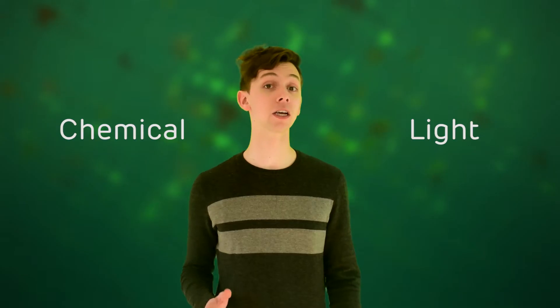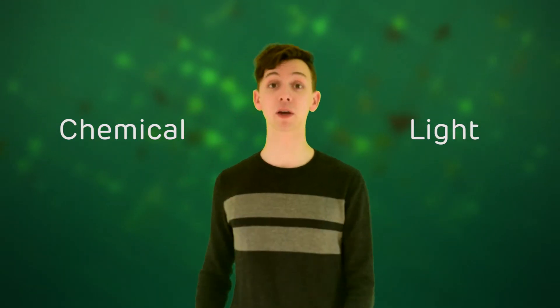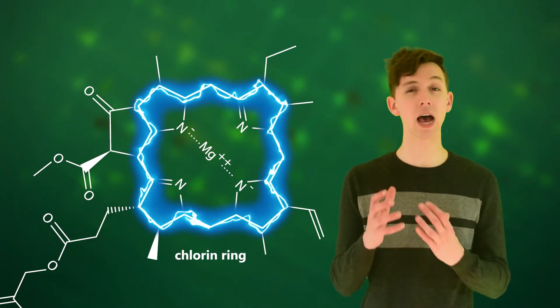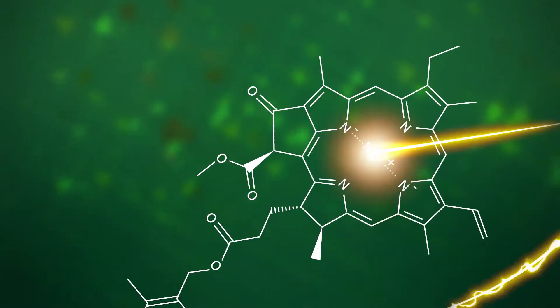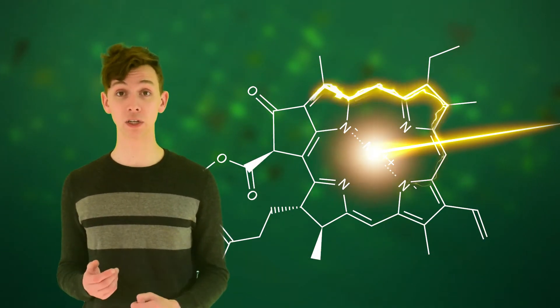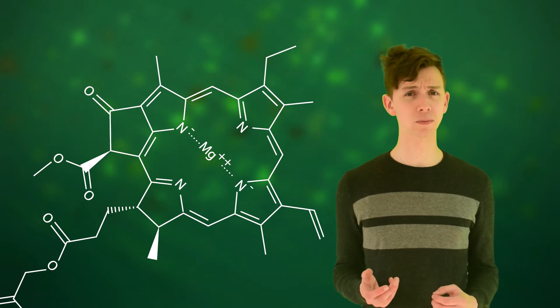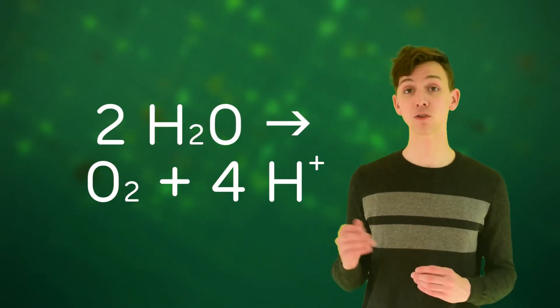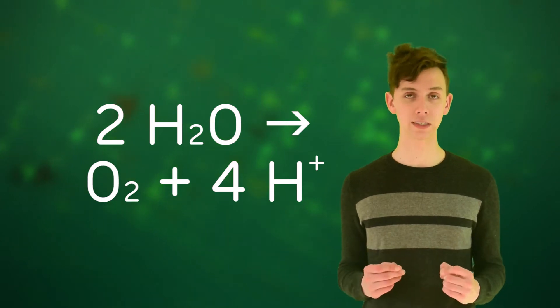Chlorophyll allows for the first critical step of photosynthesis to take place: the conversion of light energy into chemical energy. The chlorophyll molecule has a special structure with electrons that aren't associated with any one atom. Hit it with enough energy in the form of light, and electrons can be ejected from the molecule altogether. But these electrons must be replaced, and this is done by splitting water into oxygen and hydrogen ions, the fuel of photosynthesis.